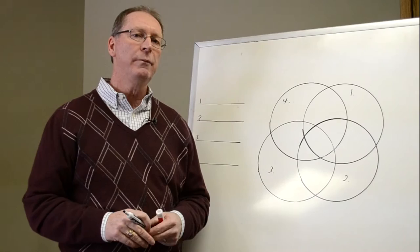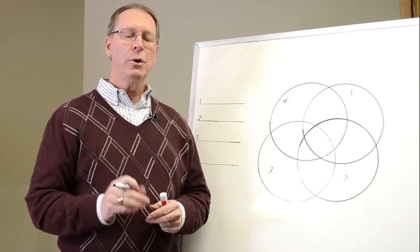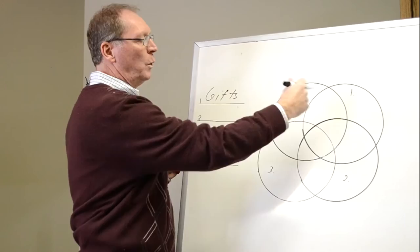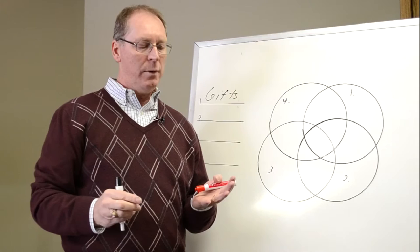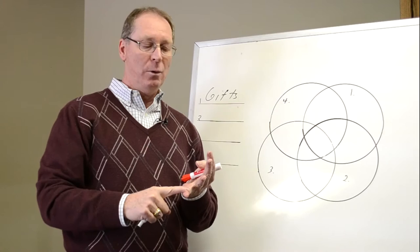The first one is the area of your gifts. If you took this one circle and said what are your gifts, gifts aren't that difficult to understand. Gifts are what are you good at, not only what do you think you're good at but what would other people say you're good at.